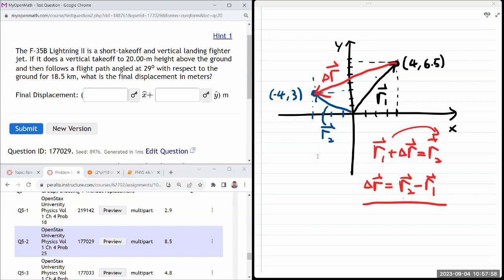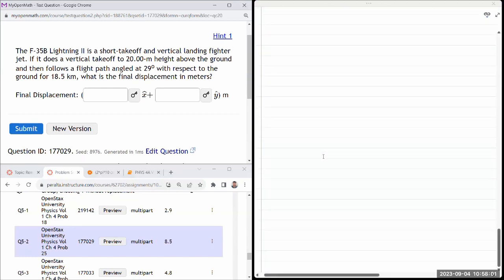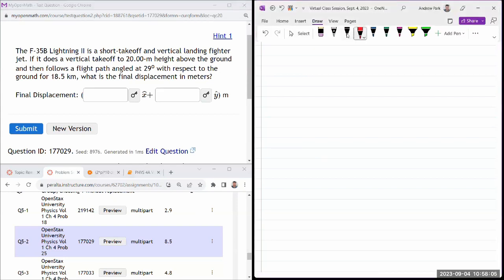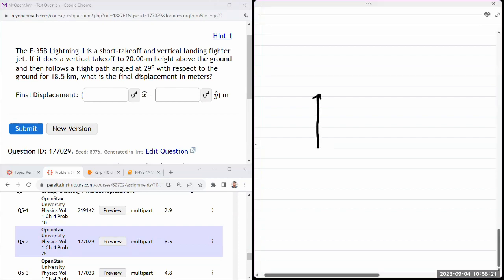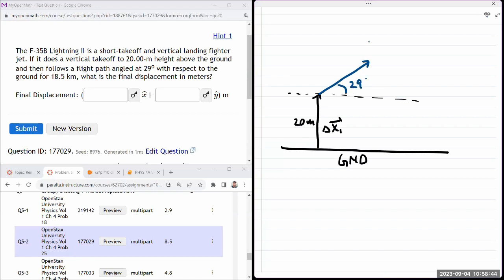So I have an airplane that apparently can do a short takeoff. So if an airplane does a vertical takeoff to some 20 meters, let me call this delta X1 above ground. This is my ground. And then follows a flight path angled at some angle theta. So I need a ground reference. And then it's going to be going off at some angle, 29 degrees with respect to ground for 18.5 kilometers.